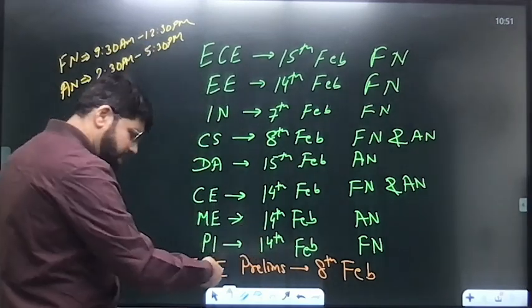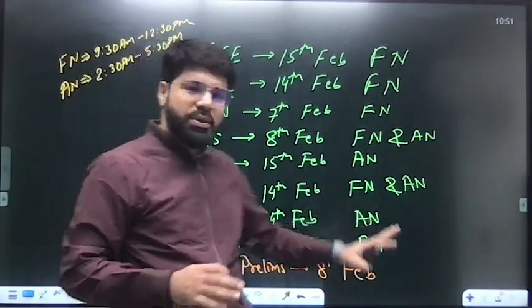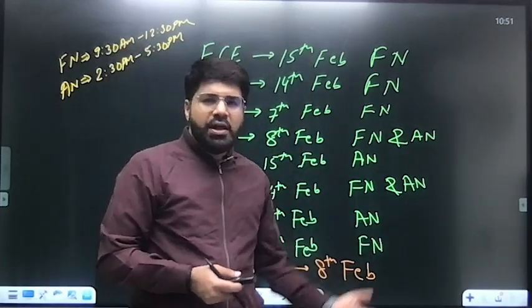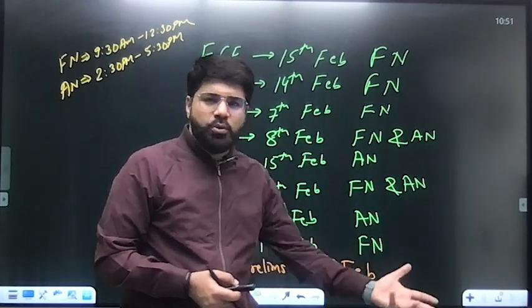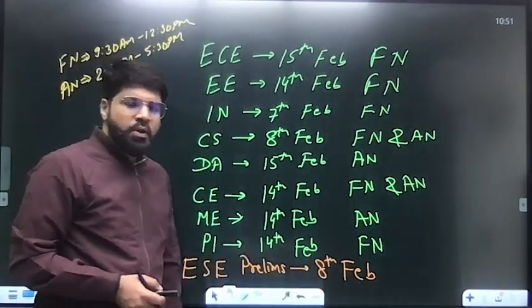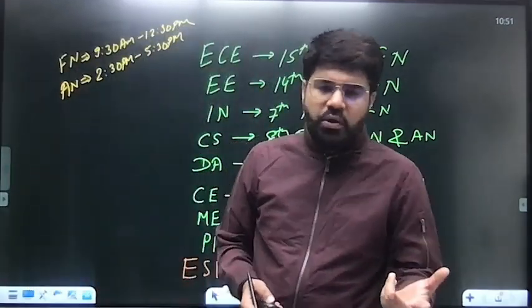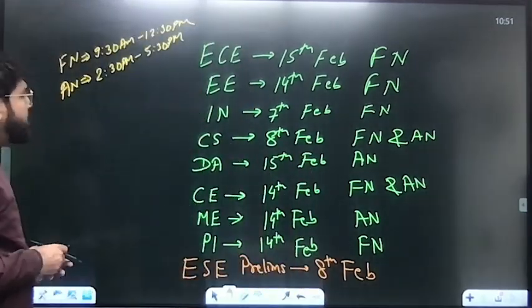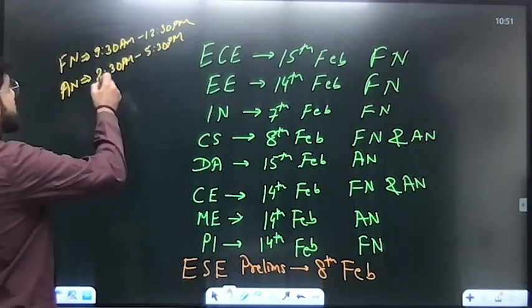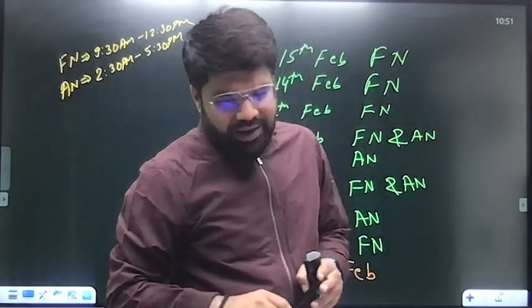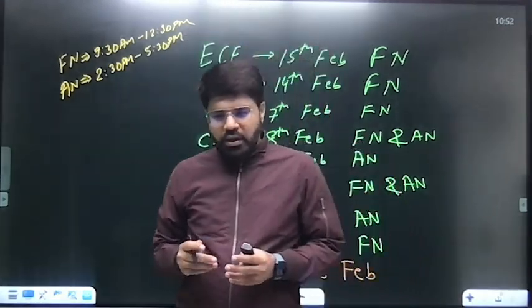This is the highlight - as you already know, Engineering Services prelims is on 8th February, both the slots. Because prelims paper will have two papers - Paper 1, the General Studies and Aptitude paper, Paper 2 is your branch paper, the technical paper. So you are occupied 8th February entire day - morning two hours for the non-tech part and afternoon three hours for the technical part. In GATE, afternoon slot is 2:30 to 5:30.